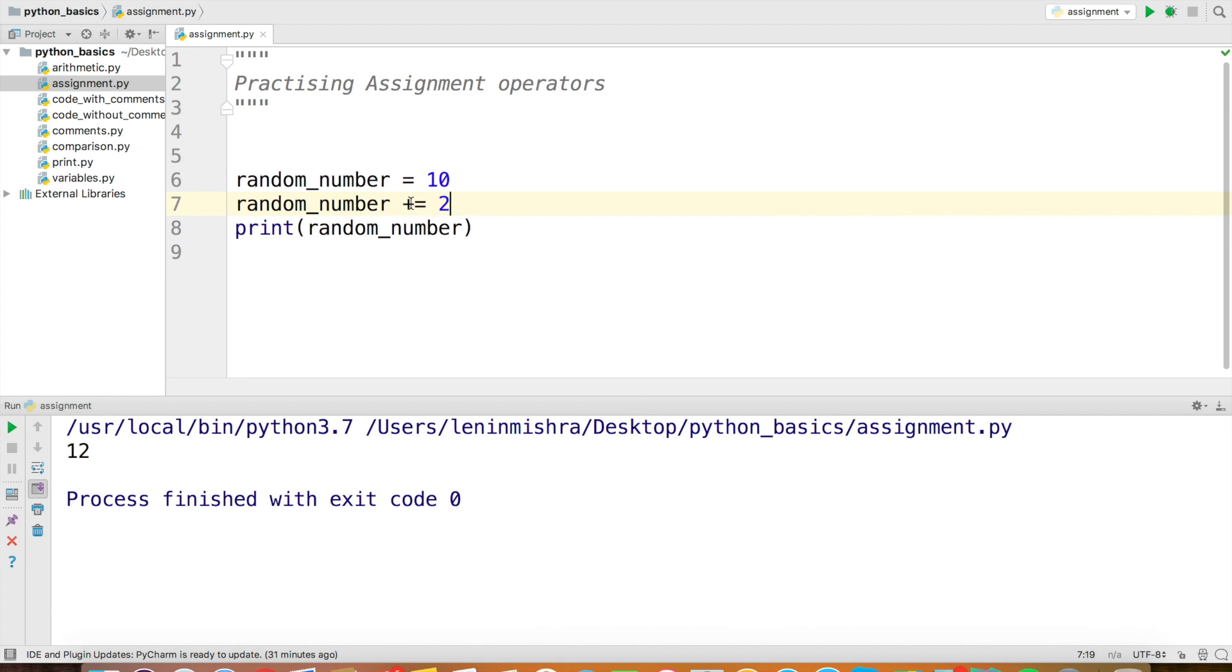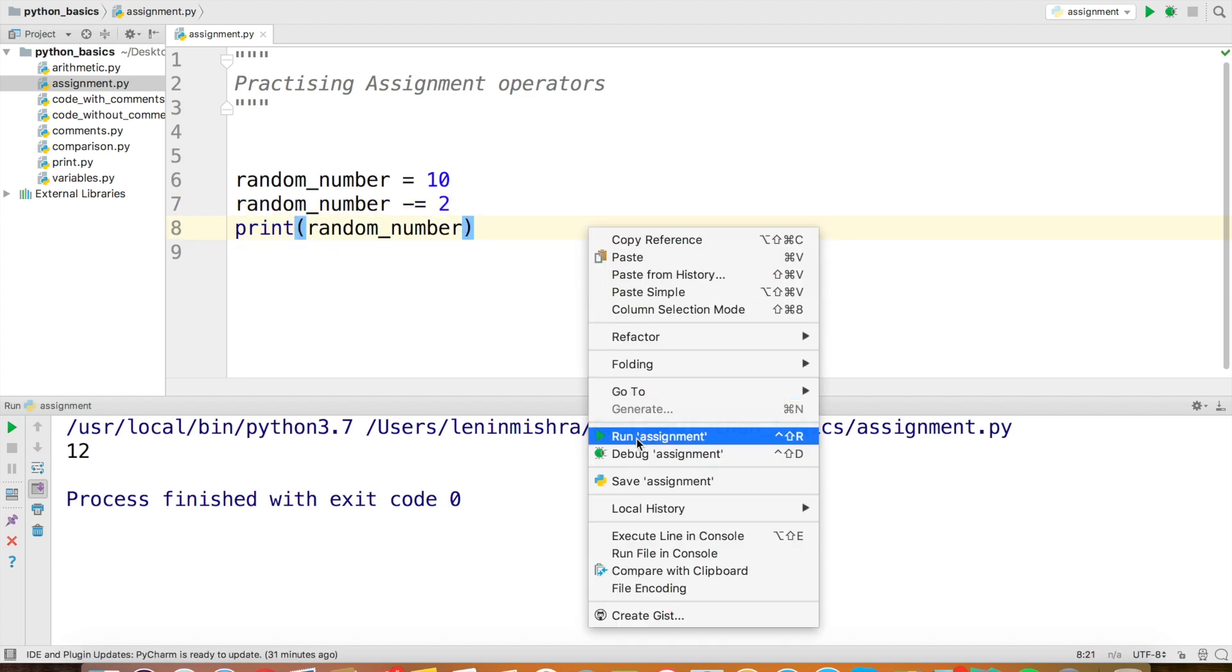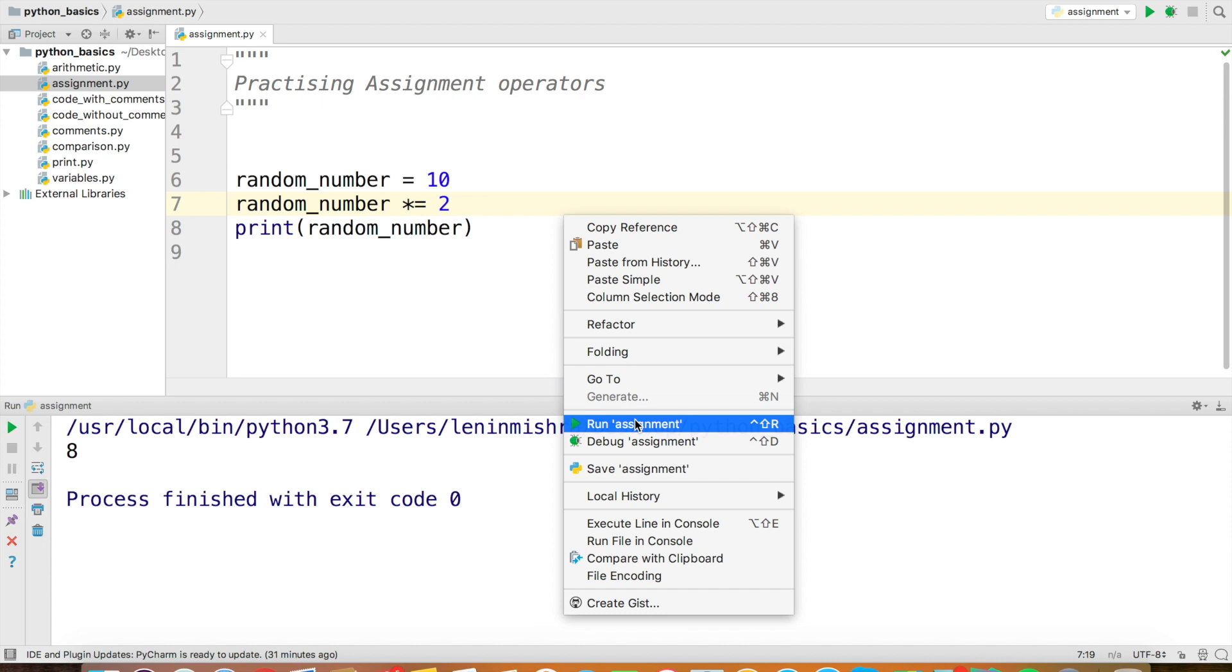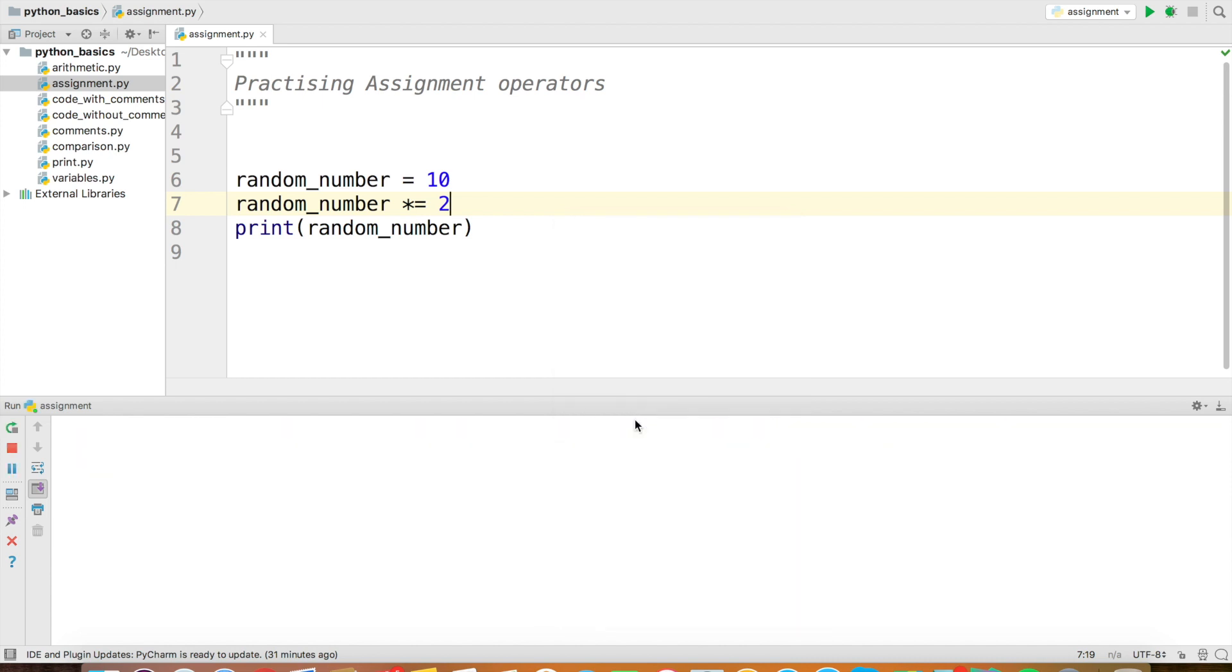Now instead of += 2, if I do -= 2, Python is going to return us 8. Similarly, if I do *= 2, Python is going to return us, well I hope you guessed it right, 20.